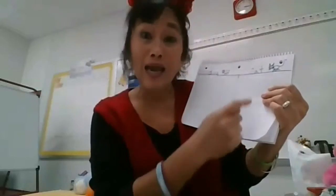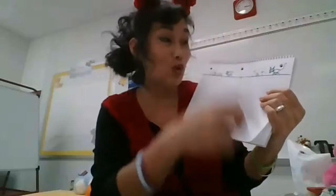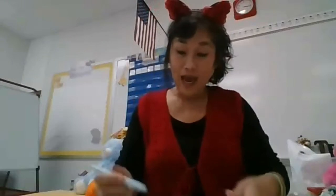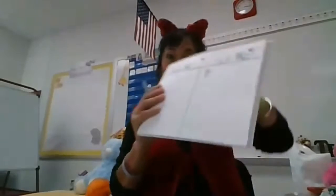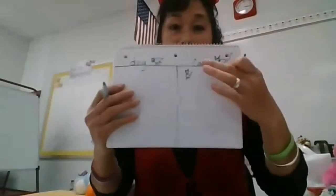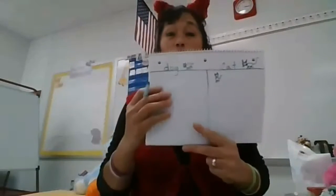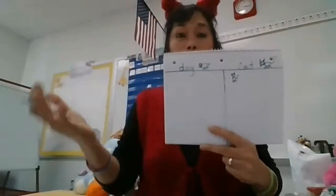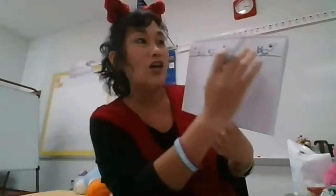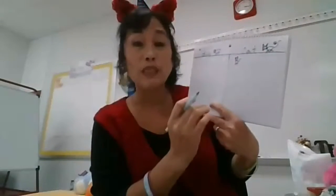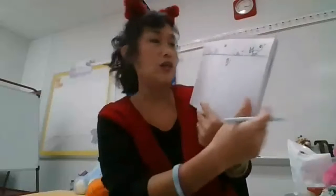So if mom says 'I like cat,' you're gonna draw a cat over here. Or you can write the word 'cat' if mommy and daddy help you. And then you're gonna go ask your grandma: 'Grandma, do you like dog or cat?' And grandma says, 'Hmm, I like dog.'